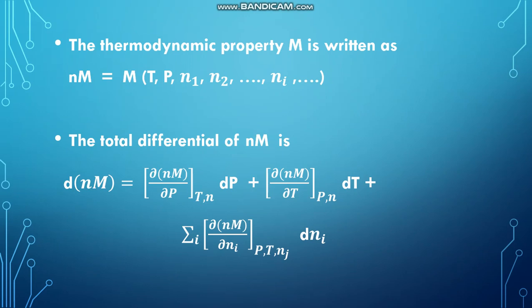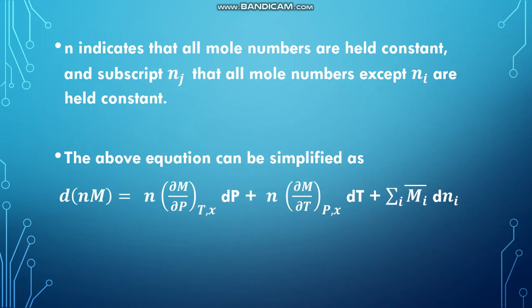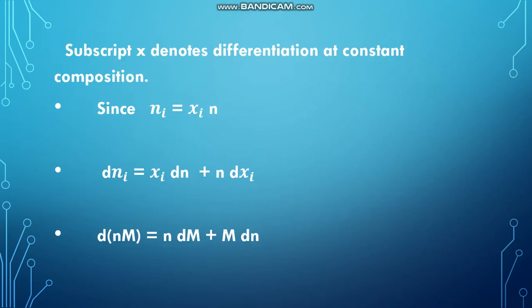Here N indicates that all mole numbers are held constant, and subscript Nj indicates that all mole numbers except Ni are constant. The above equation can be simplified as D of Nm equal to N into dou M by dou P at constant temperature and composition X into dP, plus N into dou M by dou T at constant pressure and composition X into dT, plus sigma I of Mi bar into dNi.